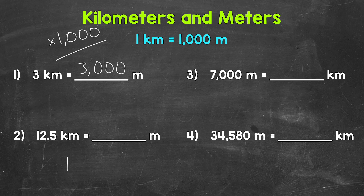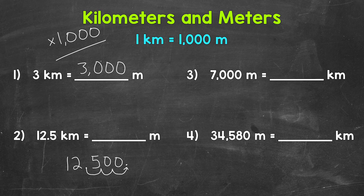Let me rewrite 12 and 5 tenths here. And let's move the decimal once, twice, and 3 times to the right. We can fill these gaps with zeros. And we have our answer: 12,500. So 12.5 kilometers equals 12,500 meters.